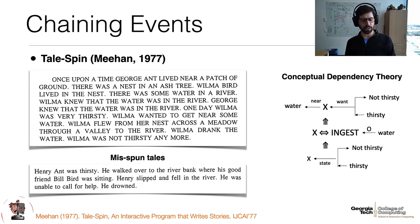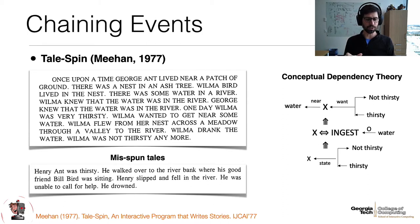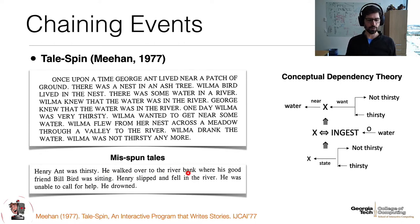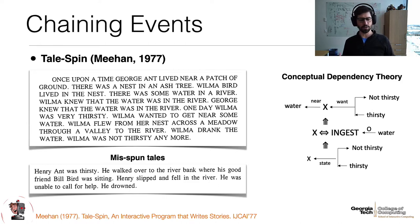Chains can also run in very unfortunate ways. One of the great things about this work is they also published their failed cases. In one case, Henry Ant going to a river: if you're next to a river, you can fall in; if you fall in, you can't call for help; and if you can't call for help, you drown. So chaining can be good, but it can also run in lots of really weird ways. Ultimately, we need to get control of the context and the chains.